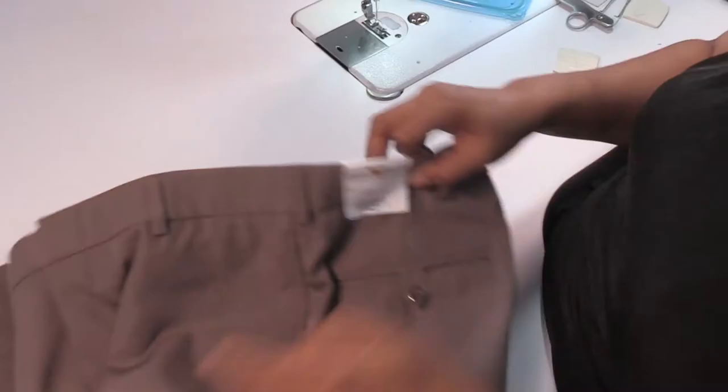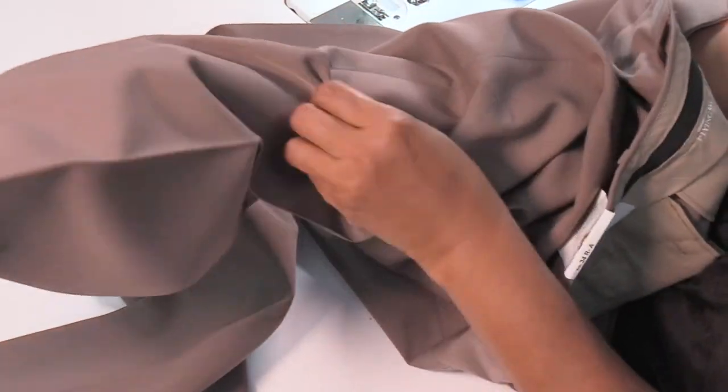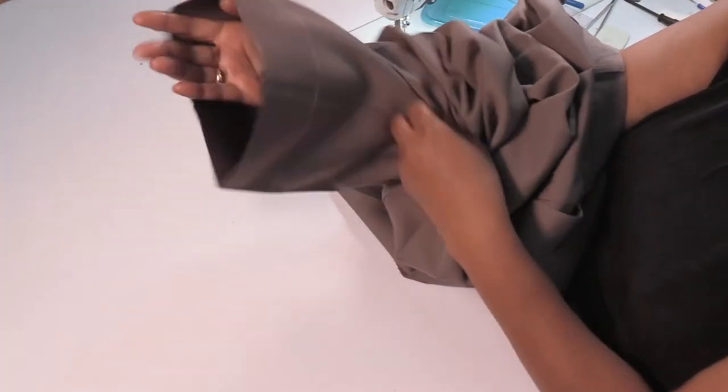Note, if you don't have an overlock serger, then use pinking shears to cut along the marked allowance cut line. Turn your pants inside out.